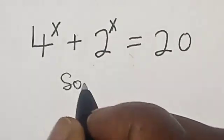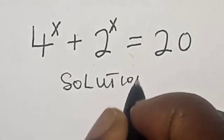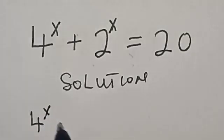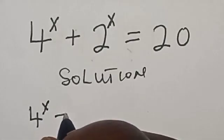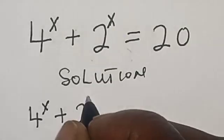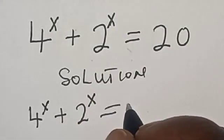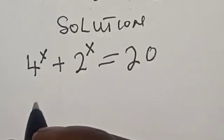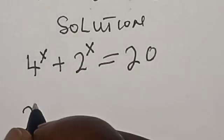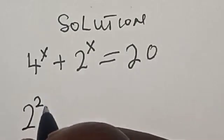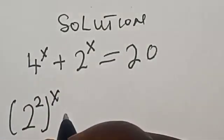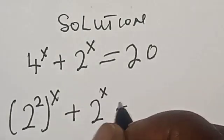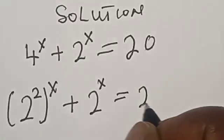Solution. 4 raised to power s plus 2 raised to power s is equal to 20. 4 raised to power s is the same thing as 2 squared raised to power s, plus 2 raised to power s, is equal to 20.